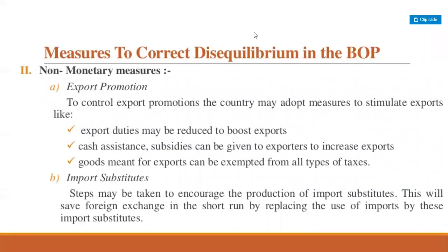Let us discuss autonomous and accommodating items. Transactions recorded in the balance of payment account are categorized into autonomous transactions and accommodating transactions. Autonomous items refer to those international economic transactions which take place due to economic motives such as profit maximization. Accommodating items refer to transactions undertaken to cover the deficit or surplus in autonomous transactions — determined by the net consequences of autonomous transactions. These items are also known as 'below the line' items.